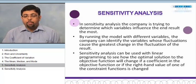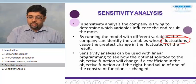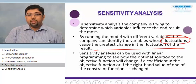We are going to change one variable and try to see the end result of the entire portfolio or project or feasibility. By running the model with different variables, the company can identify the variables whose fluctuations cause the greatest change in the fluctuation of the result.